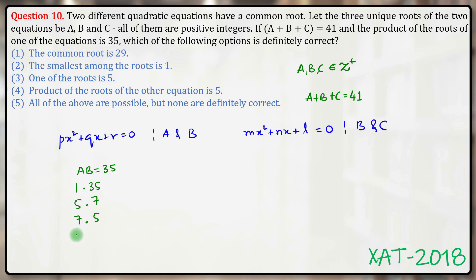B's value can be 7 times 5, 5, 35 times 1, or 1. So therefore b can take 4 different values: 35, 7, 5, 1.